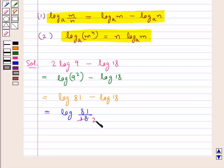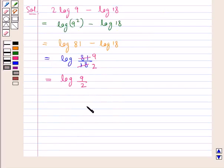Now 9 times 2 is 18, and 9 times 9 is 81. So this is equal to log of 9 upon 2. Thus, log 9 upon 2 is our final answer.